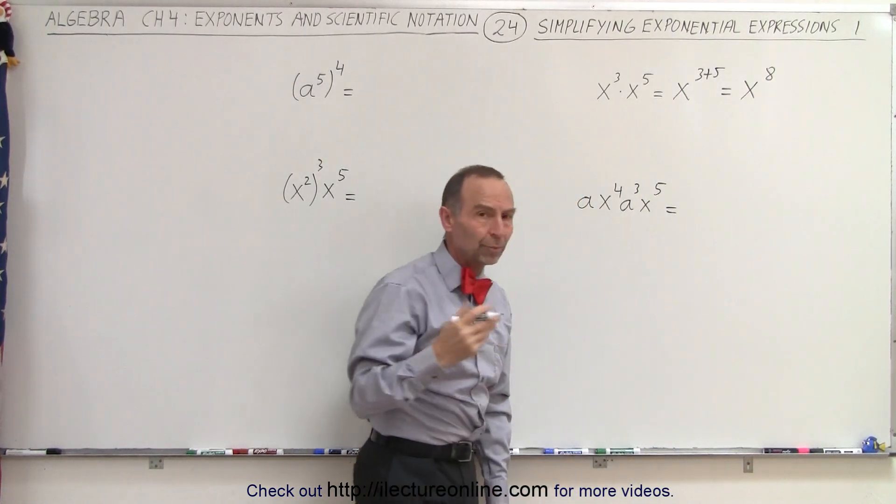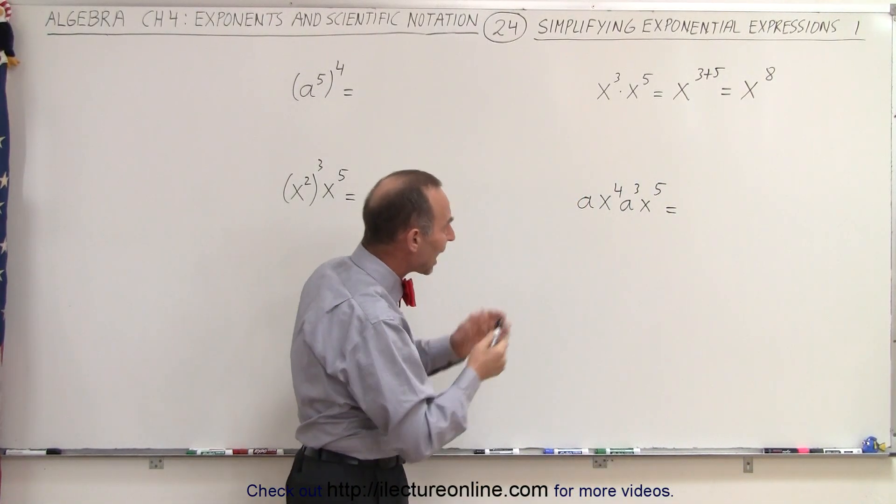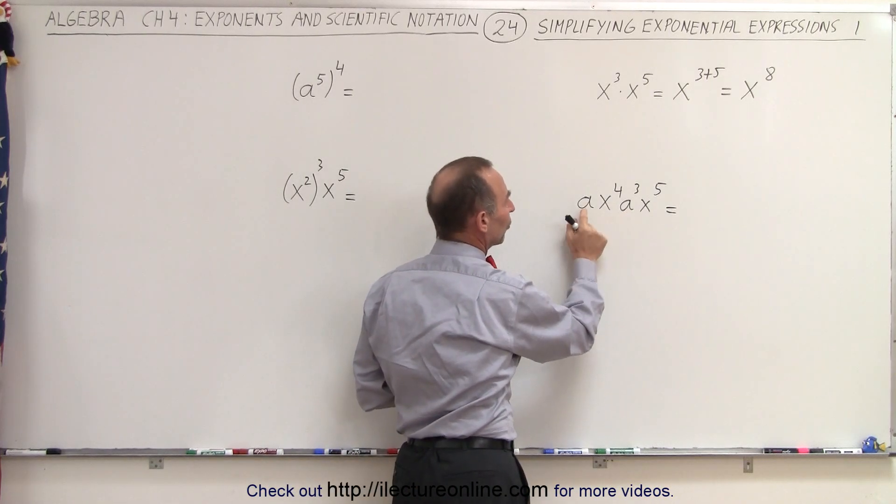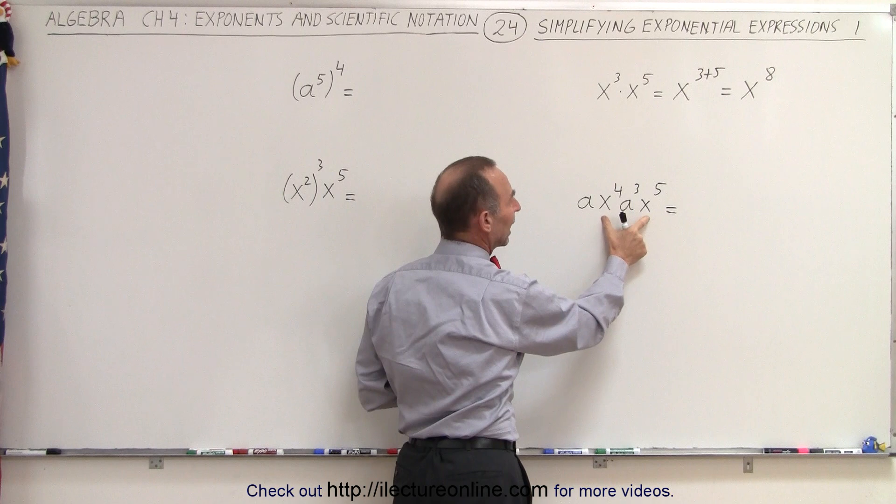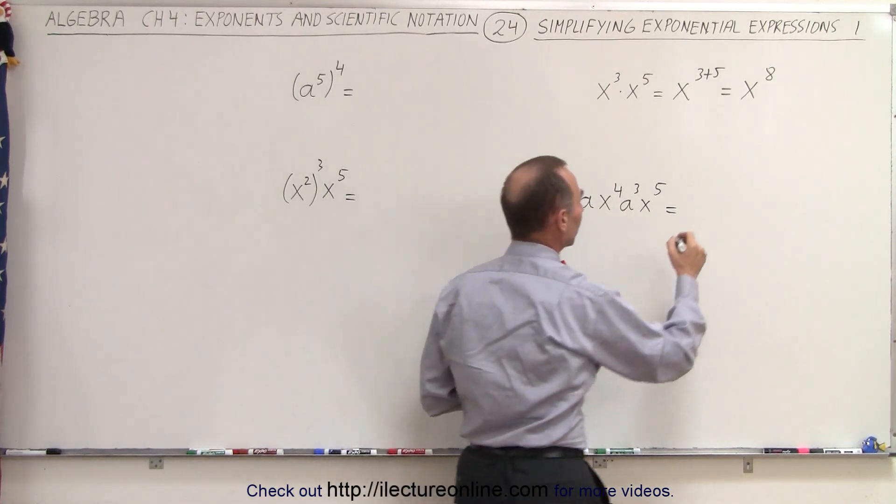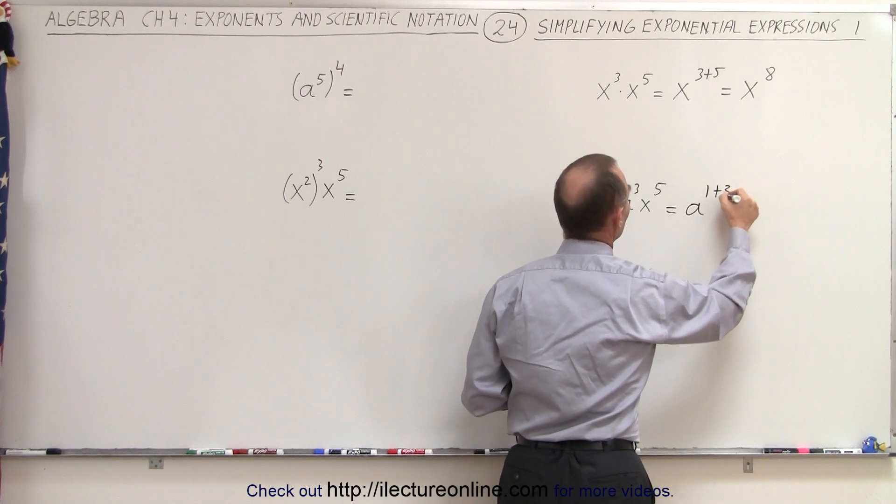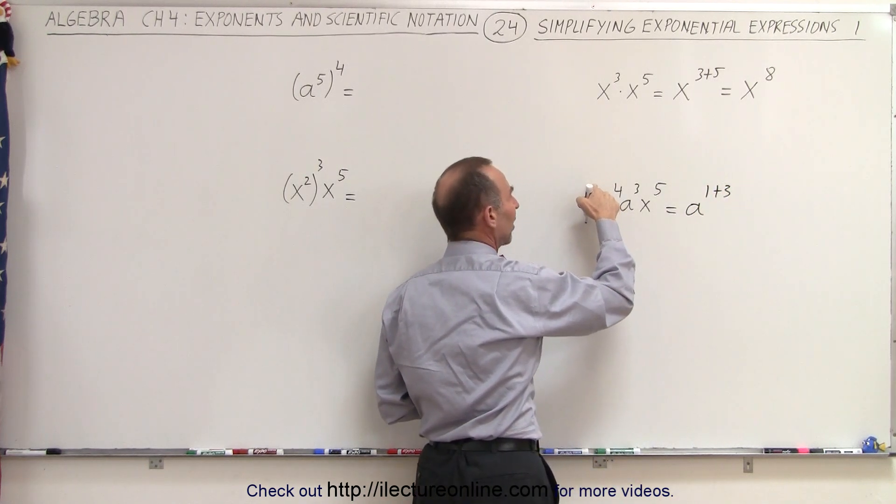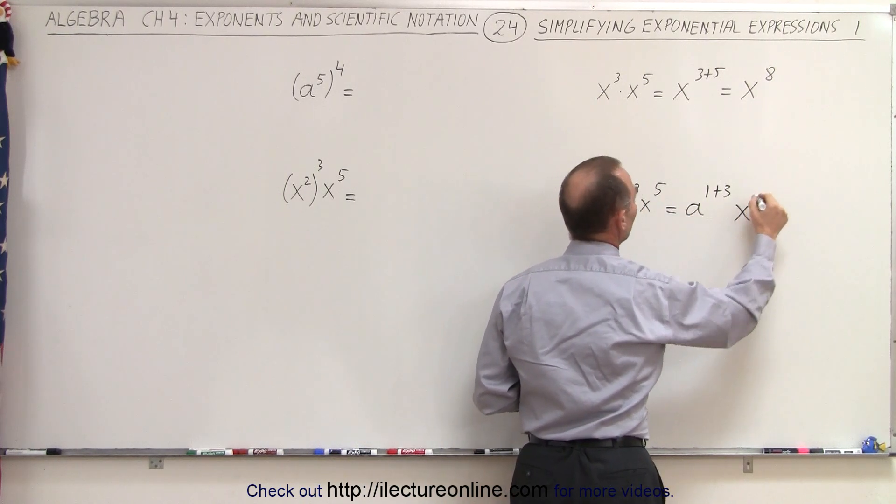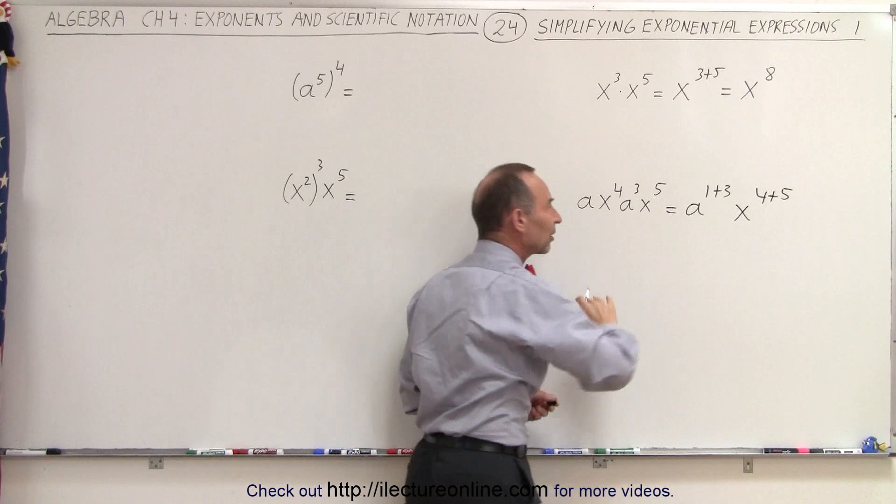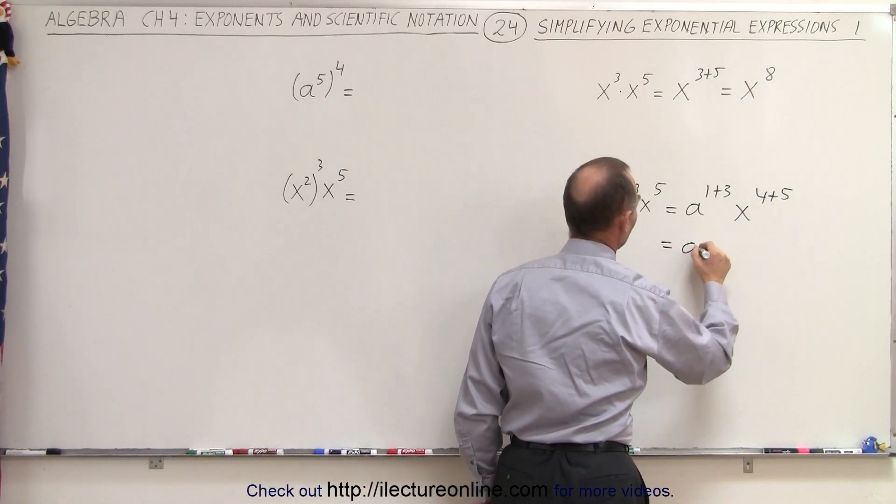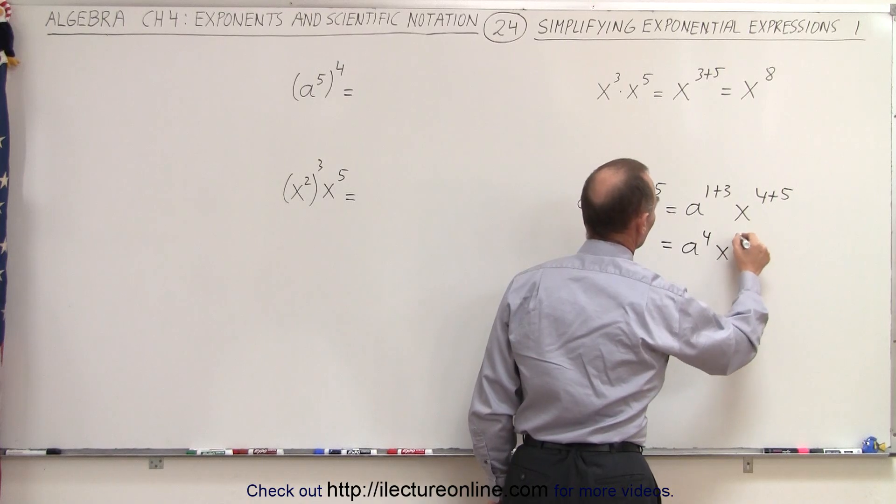Here, again, we express our understanding that we can only add exponents if the bases are the same. So we can add the exponents for the a's, we can add exponents for the x's, but we can't do any cross additions. So this becomes a to the 1 plus 3, because even though we didn't write the 1, it's actually there, and multiply times x to the 4 plus 5. So we only add exponents when the bases are the same, and so this becomes equal to a to the 4th x to the 9th.